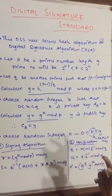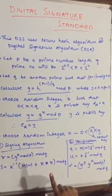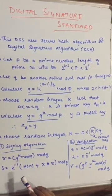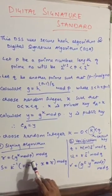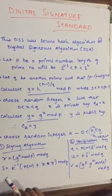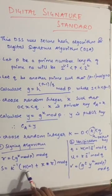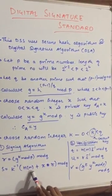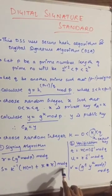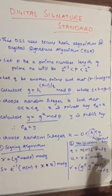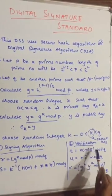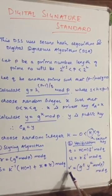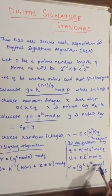To solve this Digital Signature Standard example, we will be doing two things: the signing algorithm and verification. The signing algorithm formula is: r is equal to g raised to k mod p, whole mod q. And s is equal to k inverse into h(m) plus x multiplied by r, whole mod q. The function h(m) will be given in the data itself.